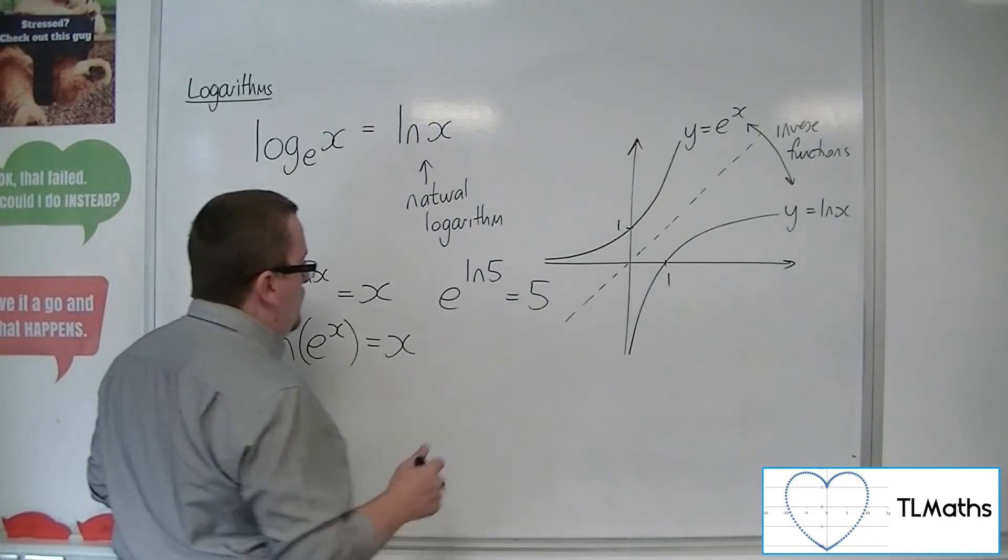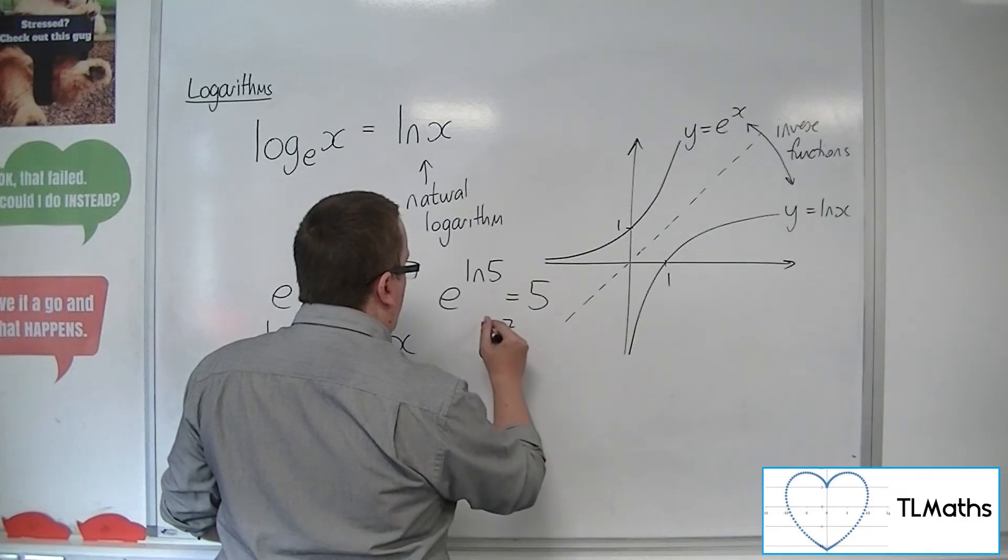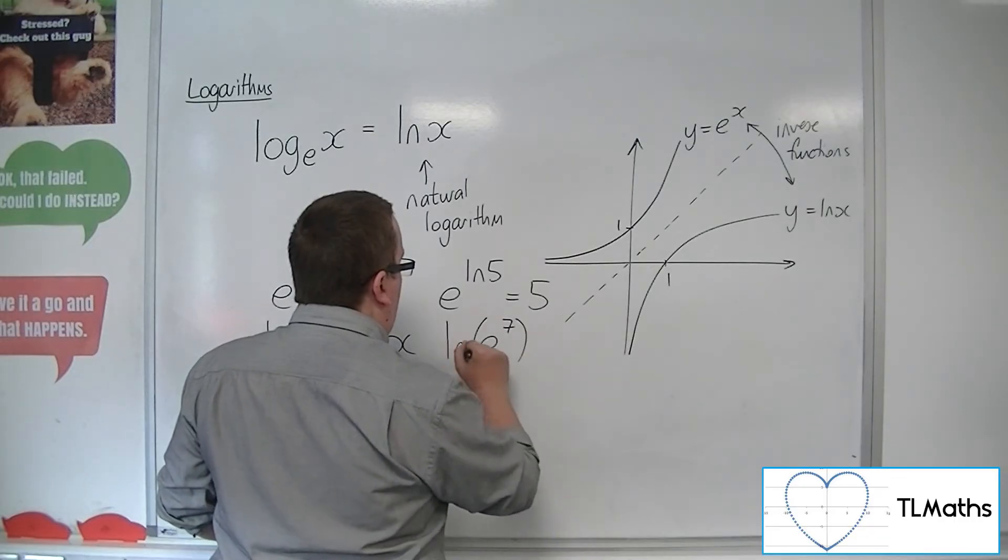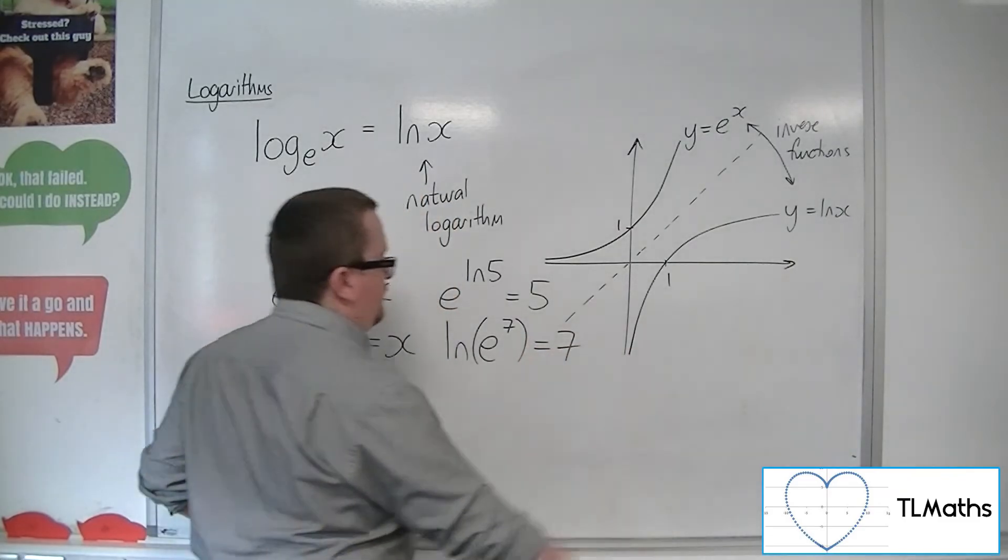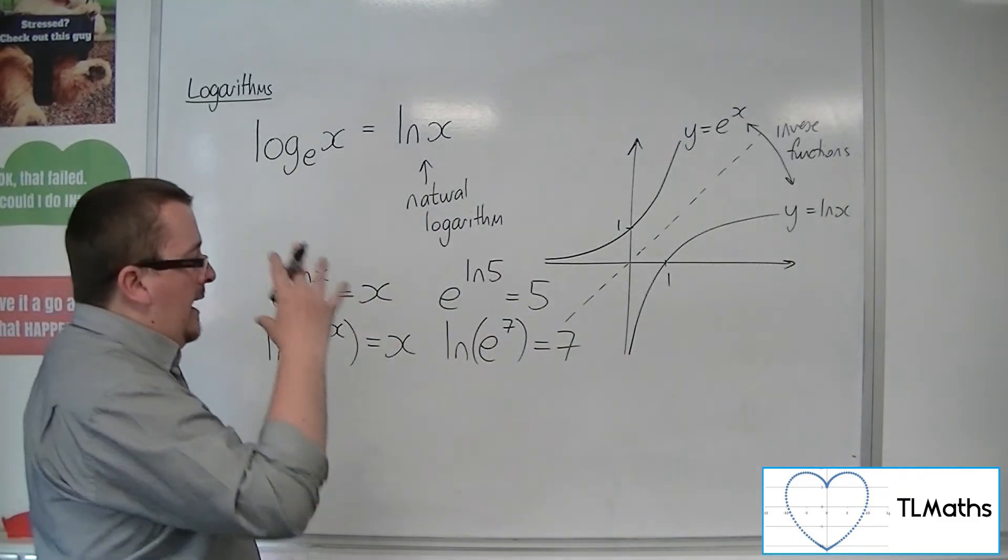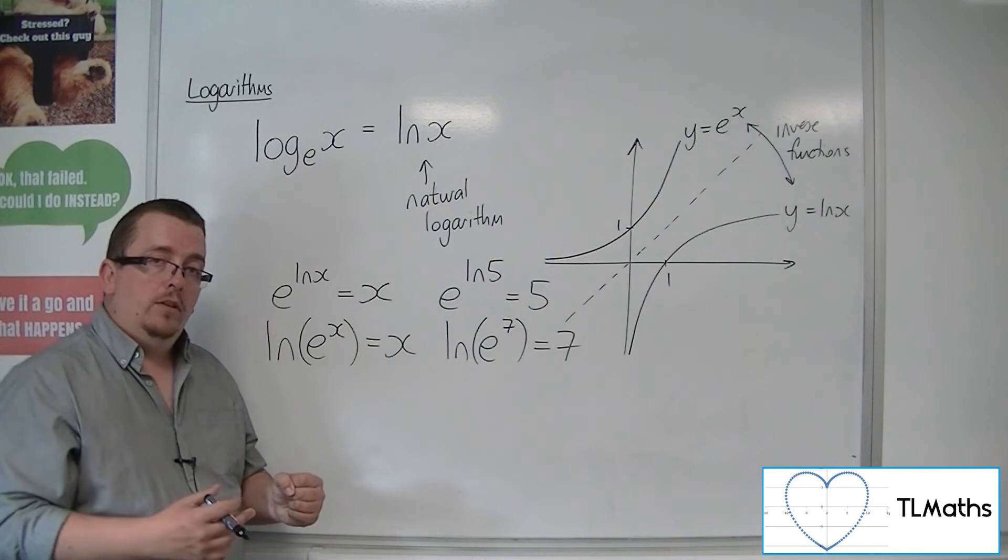And in much the same way, if you've got e to the 7, type that into your calculator, and then you do the natural logarithm of that, you should just get 7.